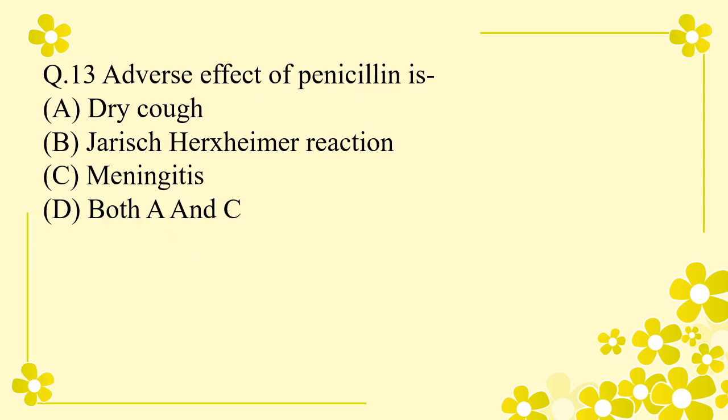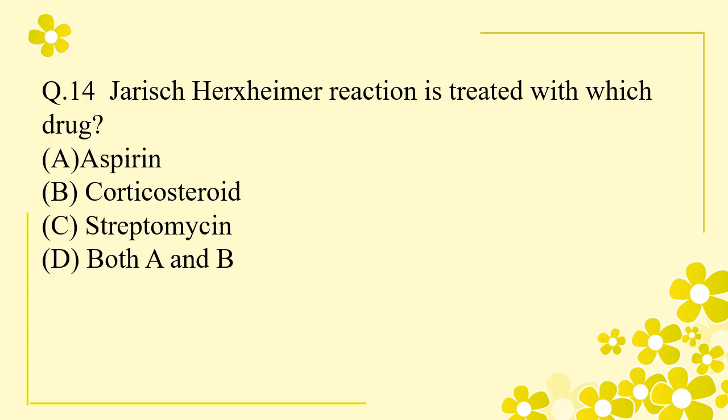Question 13: Adverse effect of penicillin — Option A: dry cough. Option B: Jarisch-Herxheimer reaction. Option C: meningitis. Option D: both A and C. The right answer is Jarisch-Herxheimer reaction. Question 14: Jarisch-Herxheimer reaction is treated with which drug? Option A: aspirin. Option B: corticosteroid. Option C: streptomycin. Option D: both A and B. The right answer is both A and B — aspirin and corticosteroid are used to treat Jarisch-Herxheimer reaction.